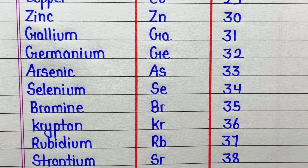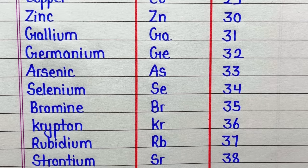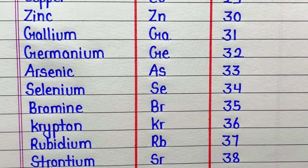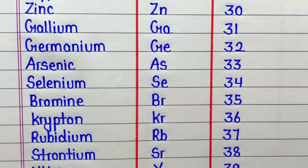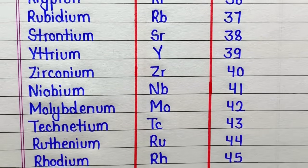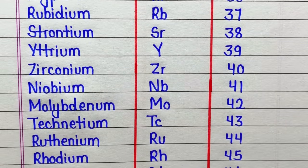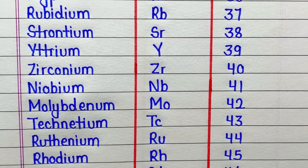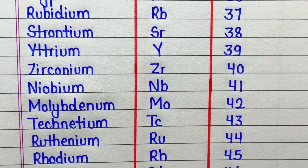Rubidium, symbol is Rb, atomic number is 37. Strontium, symbol is Sr, atomic number is 38. Yatrium, symbol is Y, atomic number is 39. Zirconium, symbol is Zr, atomic number is 40.